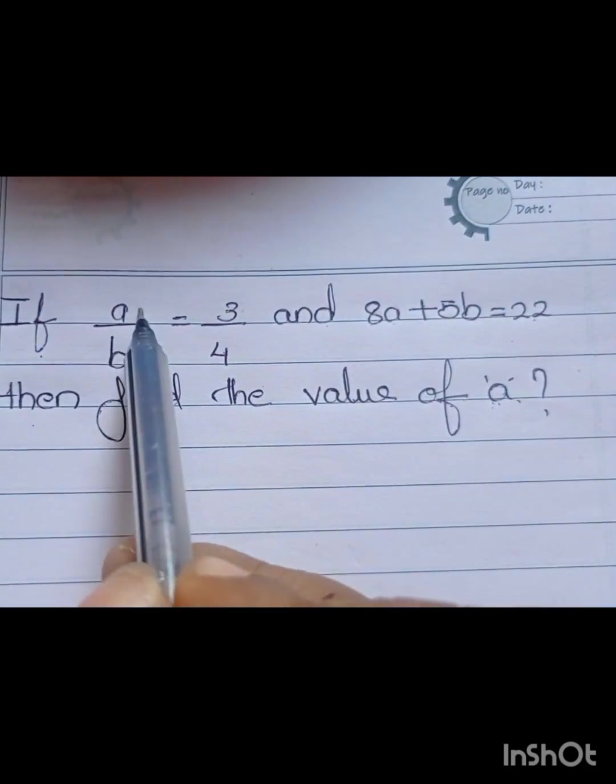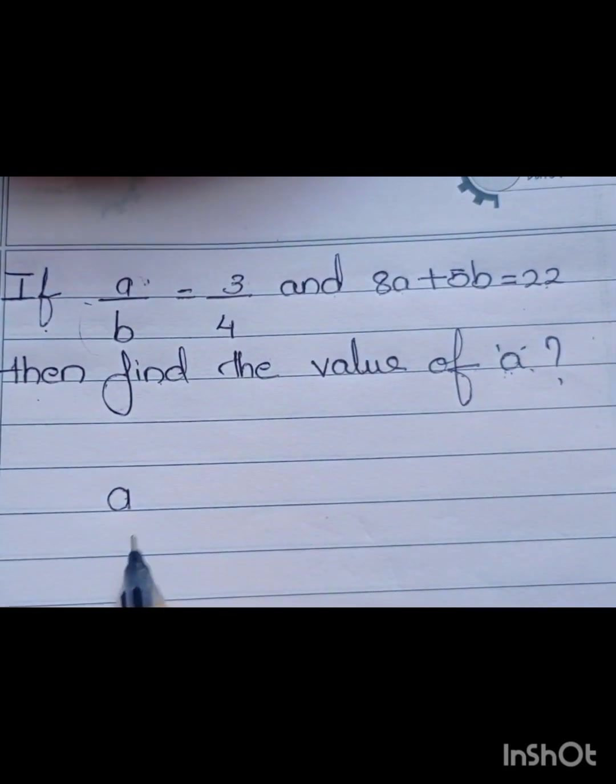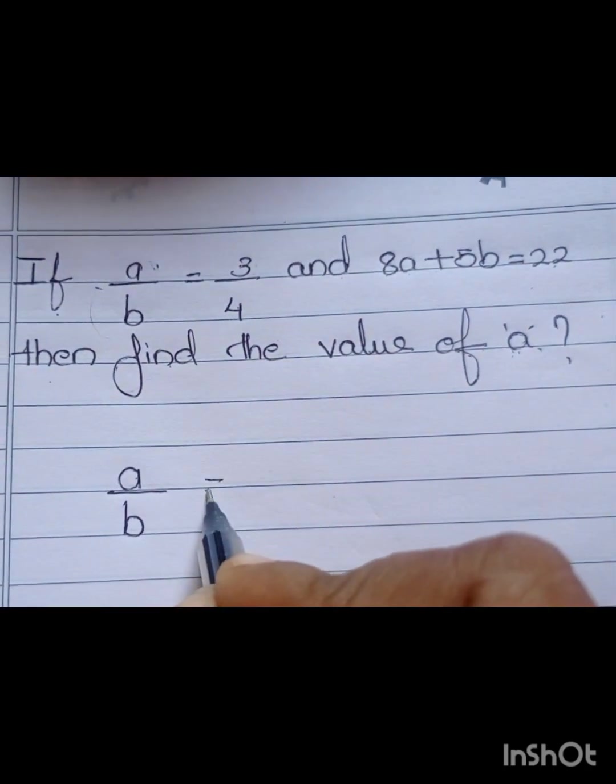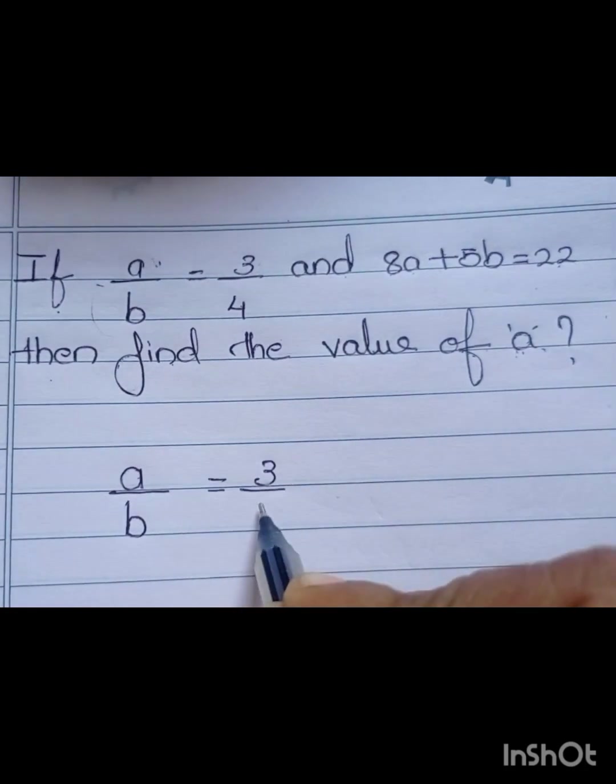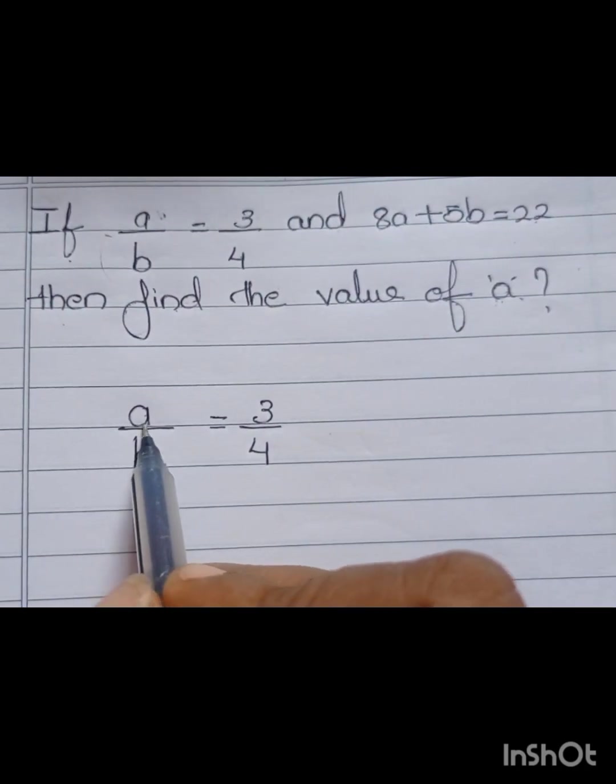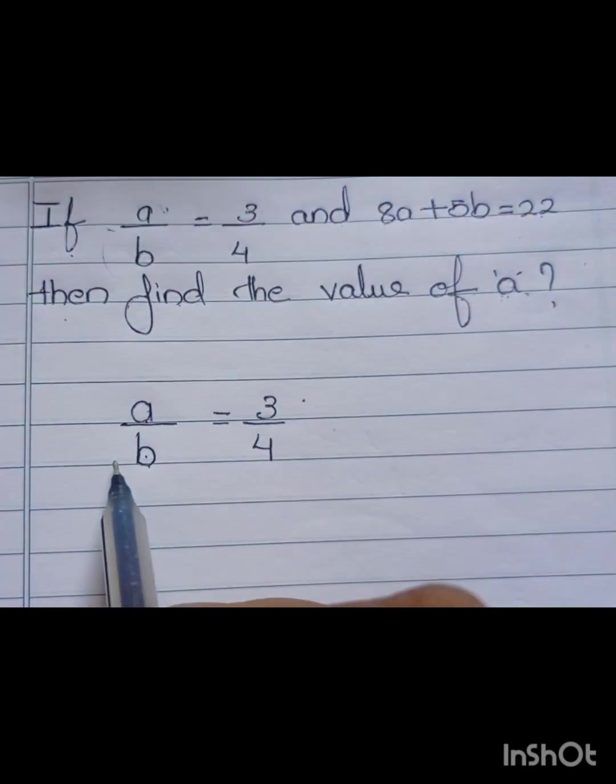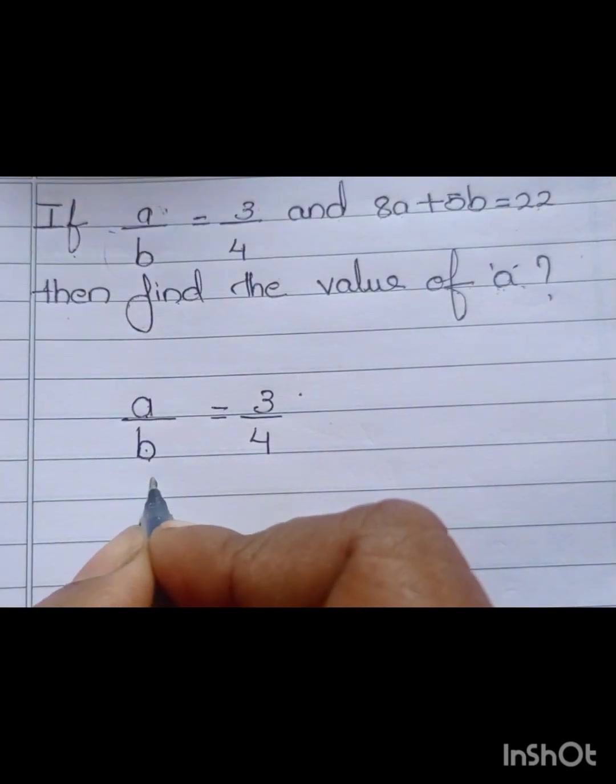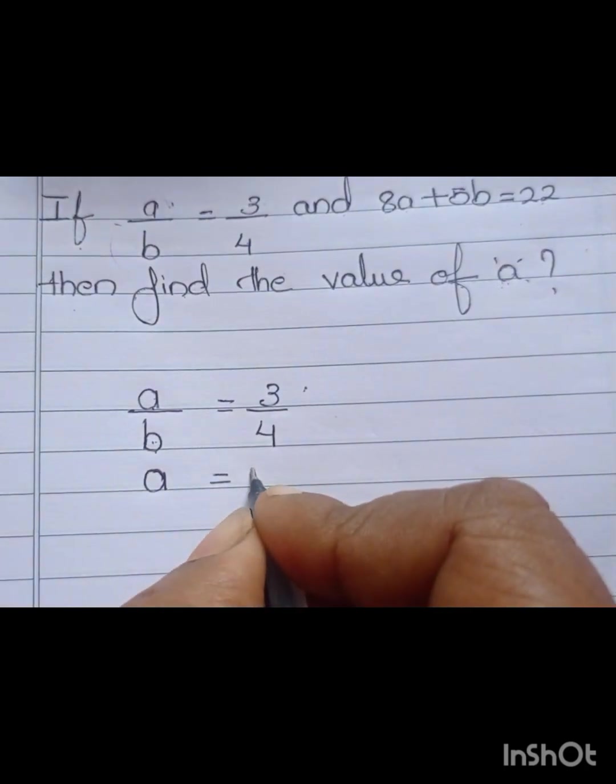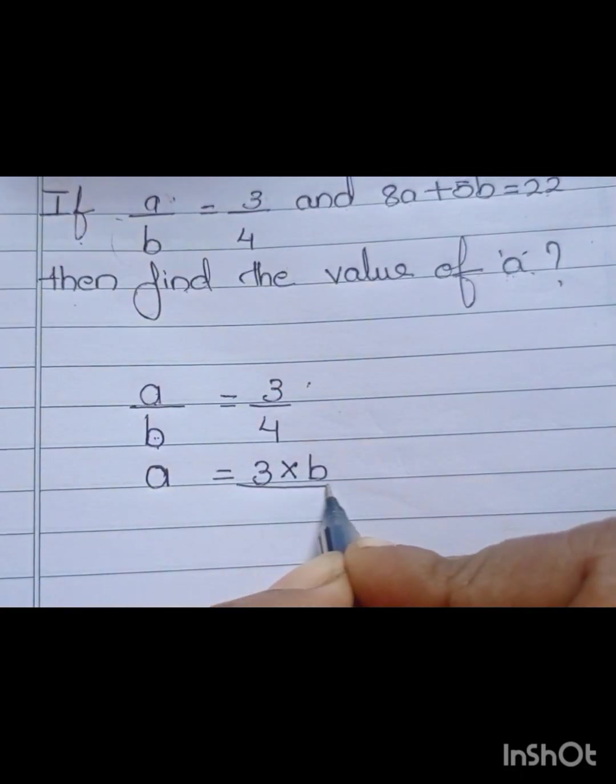First write the first equation. A by B equal to 3 by 4. Then, we are going to find A from here. We are taking this B on the opposite side.